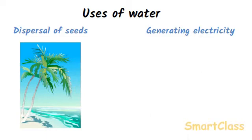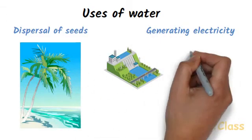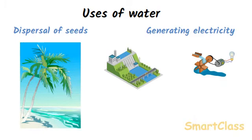Generating Electricity: At hydroelectric power plants, water stored in a high dam falls from a great height on turbines of water wheels. These turbines then rotate very fast and run the generators which produce electricity.